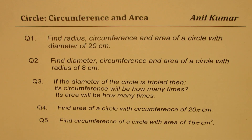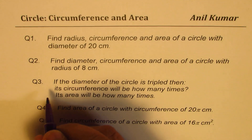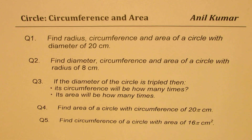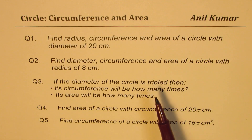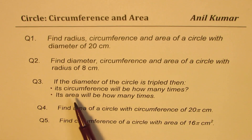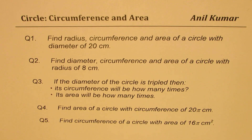Question number three: if the diameter of the circle is tripled, then its circumference will be how many times? Its area will be how many times? So here we have two questions — what is the relationship between diameter and circumference and area? If we triple the diameter, then the circumference will be how many times, and the area will be how many times?